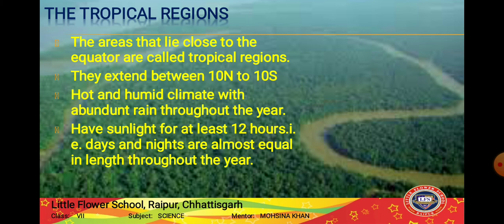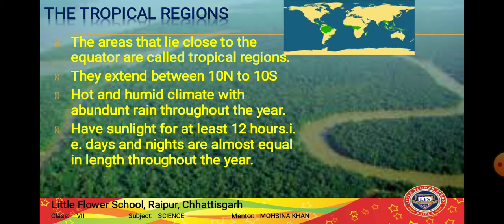Now moving on to tropical regions. The areas that lie close to the equator are called tropical regions. The equator is an imaginary line passing through the center of the earth. Tropical regions extend between 10 degrees north and 10 degrees south. These areas have a hot and humid climate - humid meaning there is a high amount of water vapor in the atmosphere.